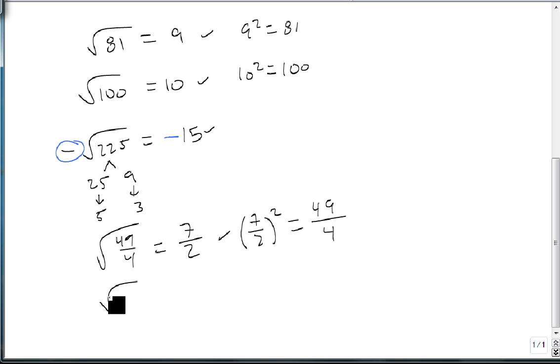We could also look at decimals. Now, there's a trick to decimals. Count the number of decimal places after the decimal point. There's 2. That means if it is a perfect square, it's only going to have 1. Half the number goes here. Then we ignore the decimal and just pretend we have the 36. Square root of 36 is 6. Add the 0 to the front, and we have our answer.